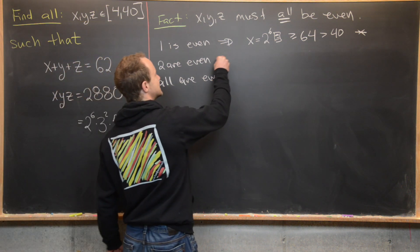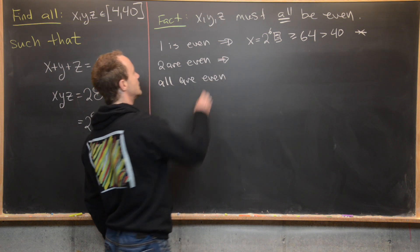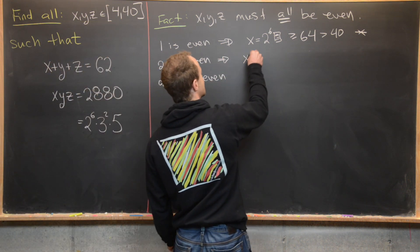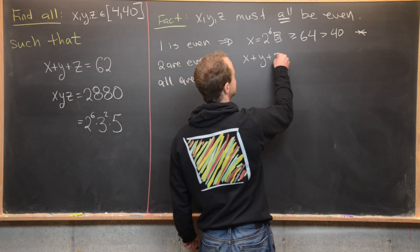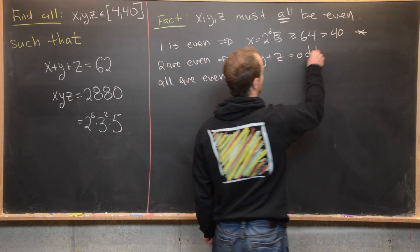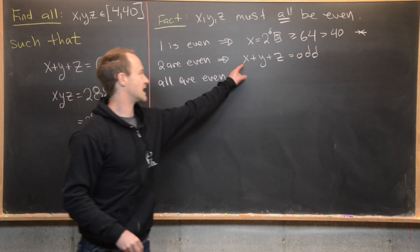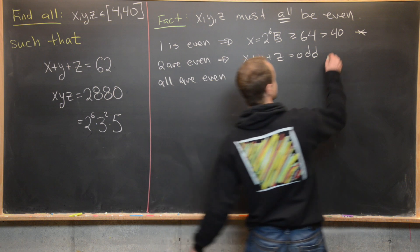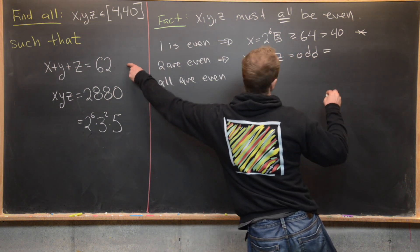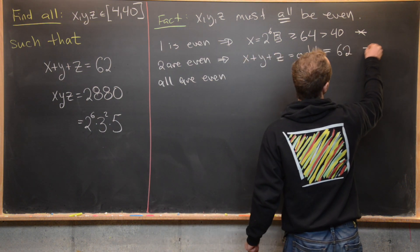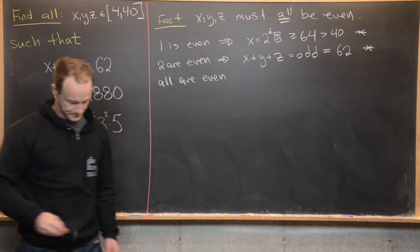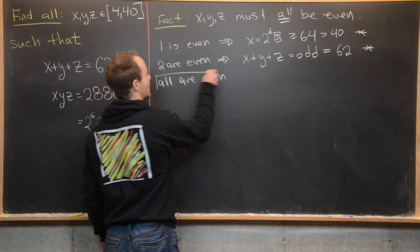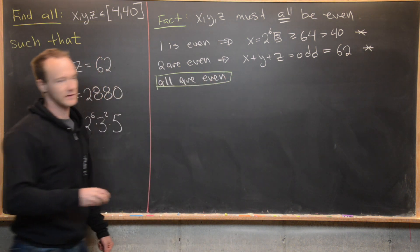Now let's say that two of them are even. But if two of them are even, then x plus y plus z will be an odd number — even plus even plus odd is clearly odd. But we need this sum to equal 62, which is even. So that's a contradiction. That leaves us with only one possibility: all are even.